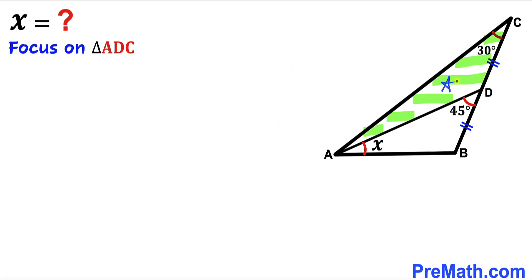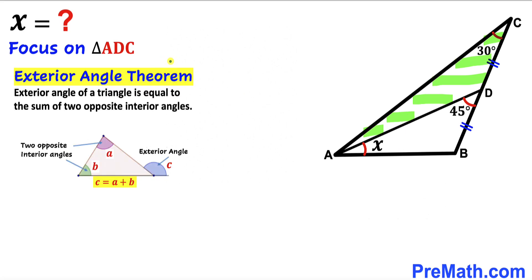Let's focus on triangle ADC and calculate angle CAD. Let's recall the exterior angle theorem. According to this theorem, the exterior angle of a triangle is equal to the sum of the two opposite interior angles. Here, angle ADB is our exterior angle, whereas angles CAD and ACD are the two opposite interior angles, such that angle ADB equals angle CAD plus angle ACD.